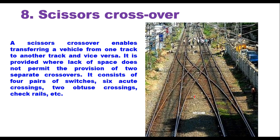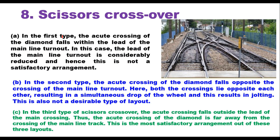Scissor crossovers commonly used are of three types. In the first type, the acute angle crossing of the diamond falls within the lead of the main line turnout, considerably reducing the lead — this is not a satisfactory arrangement. In the second type, the acute angle crossing falls opposite the crossing of the main line turnout, causing both crossings to lie opposite each other, resulting in a simultaneous wheel drop and jolting — also undesirable. In the third type, the acute crossing falls outside the lead of the main crossing, keeping it far away from the main line crossing, and this is considered the most satisfactory arrangement.